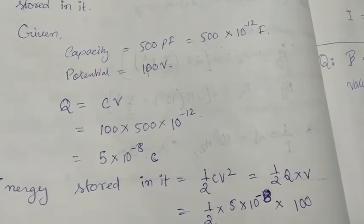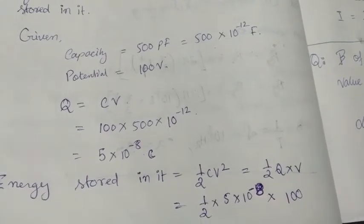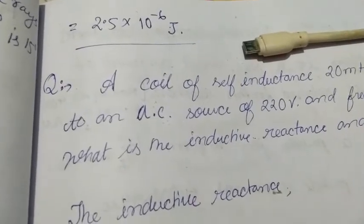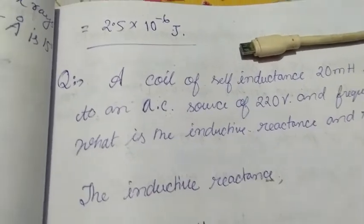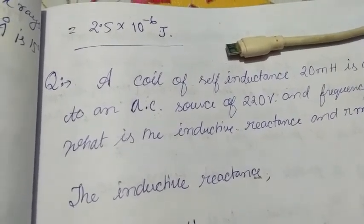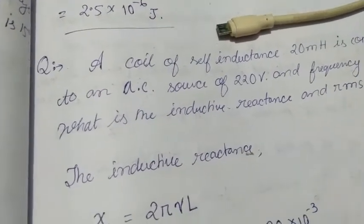Into 100 V, that is the potential. So I place 2.5 into 10 to the power minus 6 Joules. So this is the energy that is stored on the condenser.